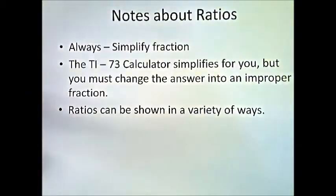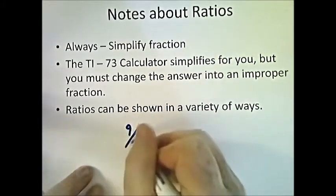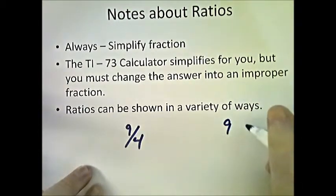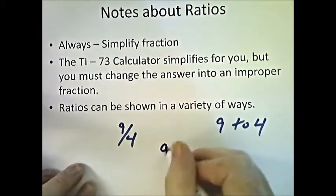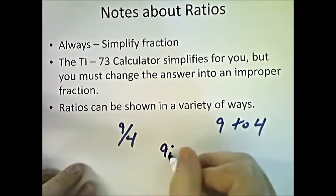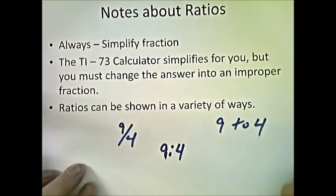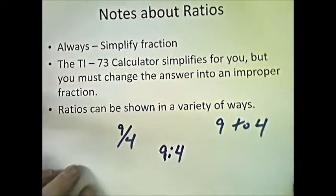Ratios can be shown in a variety of ways. One way is as a fraction: 9 over 4. Another way is to write it out as '9 to 4.' Or you can use two colons — 9 colon 4. You may see ratios written in probably one of these three ways.